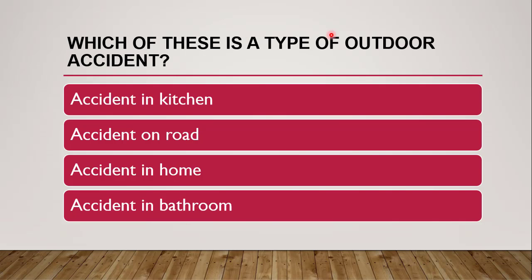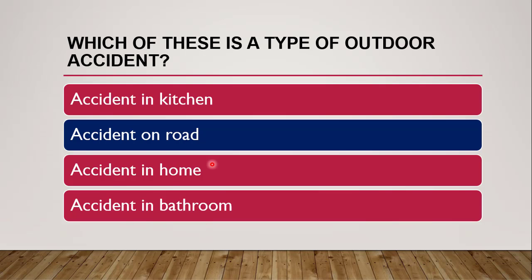Next question: which of these IS a type of outdoor accident — accident in kitchen, on road, in home, or in bathroom? The correct answer is accident on road, since outdoor means outside the home. Kitchen, home, and bathroom are all indoor, so road accident is the correct outdoor type.